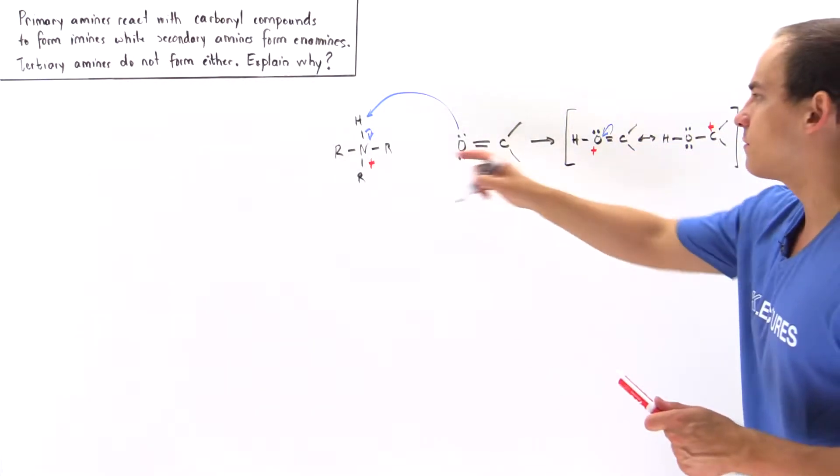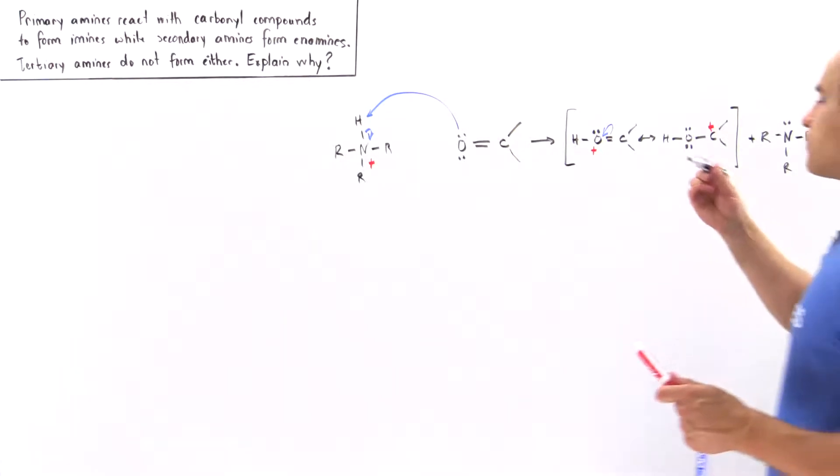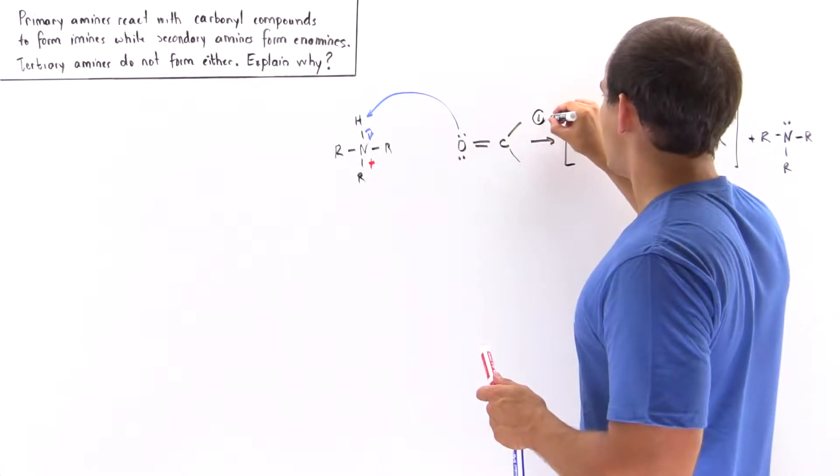We have the delocalization of our charge between these two different atoms. We also form our tertiary amine. The tertiary amine is basically an amine that does not contain any H atoms. It only contains these hydrocarbon groups as well as the lone pair of electrons. So this is basically step one.